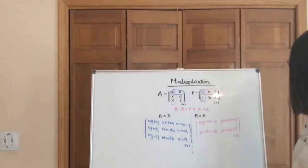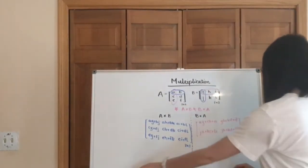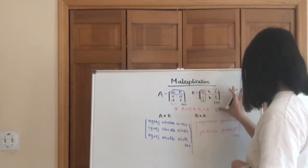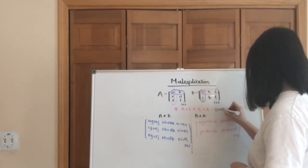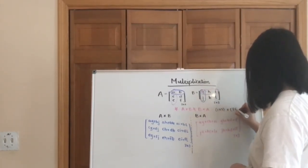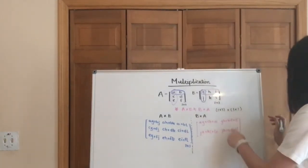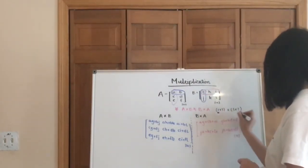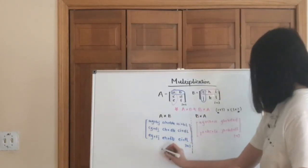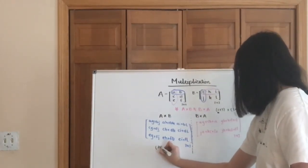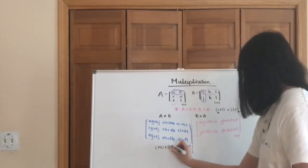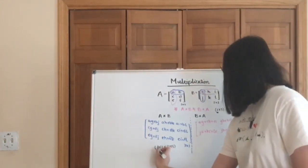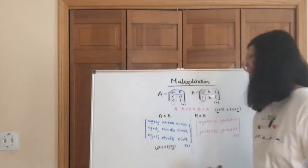But basically, when you multiply b by a, that's a 2 by 3 multiplied by a 3 by 2. And the resultant matrix is going to be of the dimensions that are of the outermost. So you can also see here, so it's a 3 by 2 multiplied by a 2 by 3. So when you multiply a by b, then the resultant is going to be a 3 by 3 matrix.